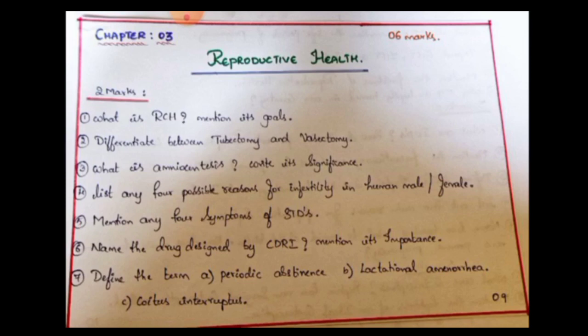Next: What is amniocentesis? Mention its significance — this is the most expected question. List any 4 possible reasons for infertility in human male or female — infertility in male or female; there are 4 reasons for infertility. Mention any 4 symptoms of STD or STI — sexually transmitted diseases or infections. Name the drug designed by CDRI and mention its importance — CDRI's full form is Central Drug Research Institute.